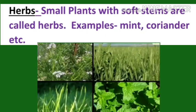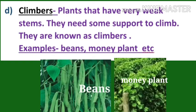Number C: Herbs. Small plants with soft stems are called herbs. Examples: mint, coriander, etc. Number D: Climbers. Plants that have very weak stems — they need some support to climb. They are known as climbers.